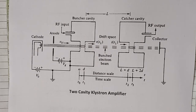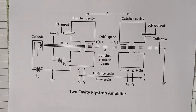We have two categories: one is the linear beam tubes and the other is crossed field tubes. In the category of linear beam tubes, we have the first tube called the two-cavity klystron tube, which is generally used as a microwave amplifier. In this video we will try to understand the constructional details and working of this two-cavity klystron tube as a microwave amplifier.